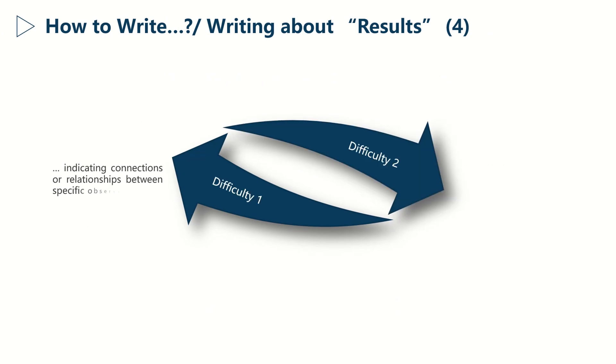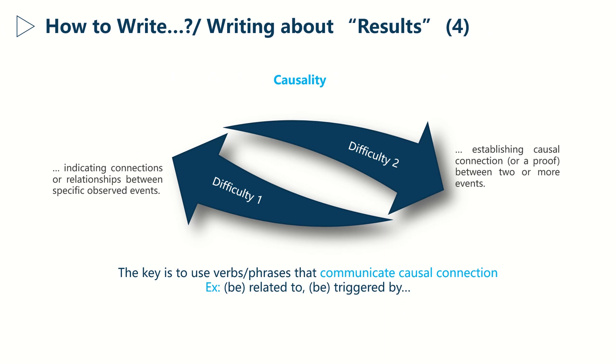This brings us to the last critical aspect of the results section, which is expressing causality. The main difficulties are indicating connections or relationships between specific events and establishing causal connections between them. The key here is to use verbs or expressions that communicate causal connections, such as 'be related to' or 'be triggered by.'